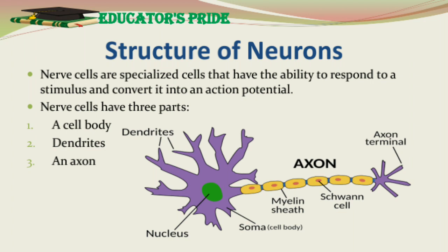Nerve cells have three parts: first, a cell body; second, dendrites; and third, an axon. The cell body contains a nucleus surrounded by cytoplasm that includes typical cellular organelles such as lysosomes, mitochondria, and a Golgi complex. Most neurons have two kinds of processes: multiple dendrites and a single axon. A single axon of a neuron propagates nerve impulses towards another neuron, a muscle fiber, or a gland cell. An axon is a long, thin, cylindrical projection that often joins the cell body to a cone-shaped elevation called the axon hillock. An axon contains mitochondria, microtubules, and neurofibrils. Because rough endoplasmic reticulum is not present, protein synthesis does not occur in the axon. The axon and its collaterals end by dividing into many processes called axon terminals.